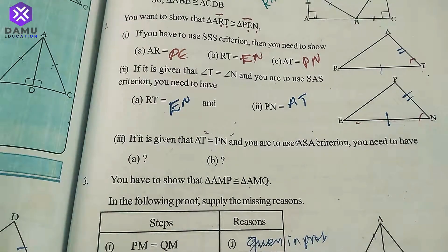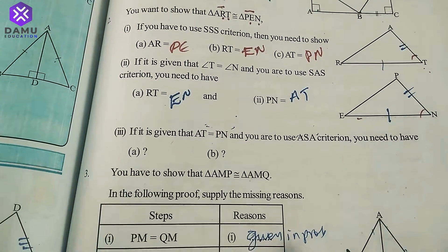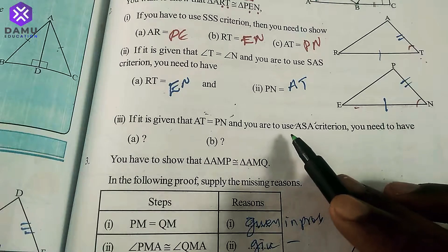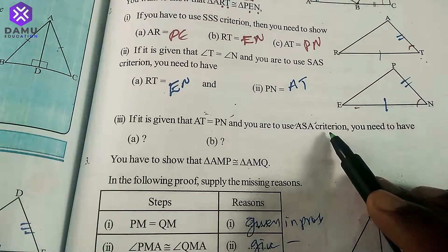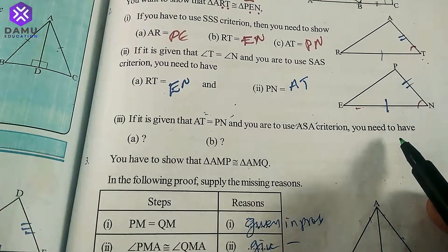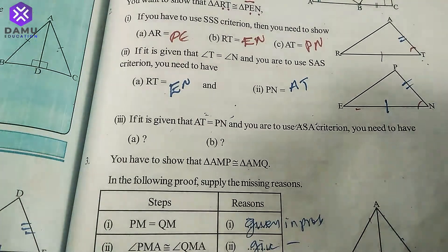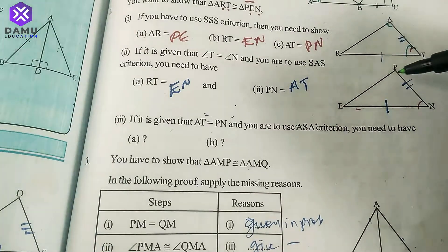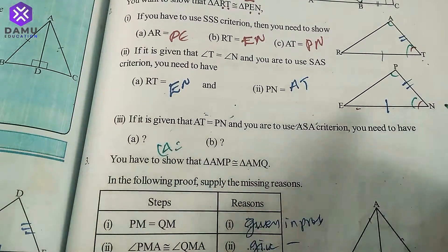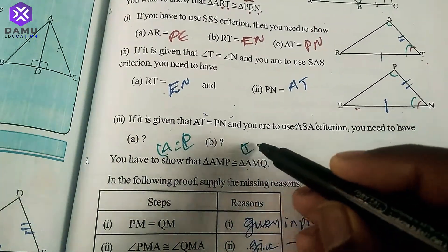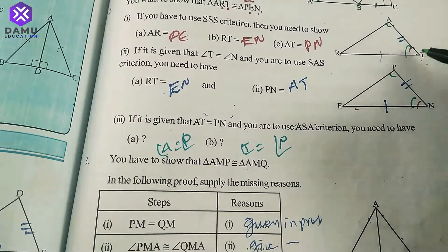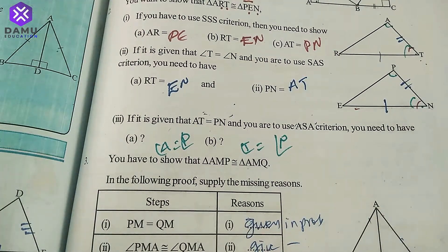Next: if AT = PEN and you are using the ASA criterion, you need angles on either side of the given side. ASA means angle-side-angle. So angle A = angle P and angle T = angle N, giving angle-side-angle congruency.